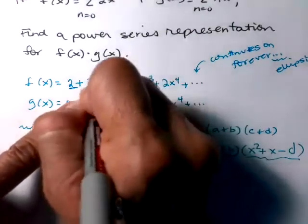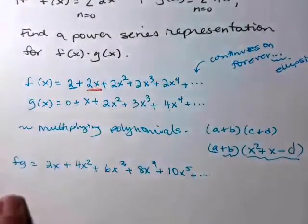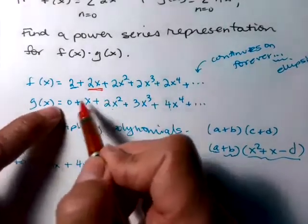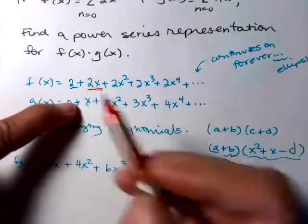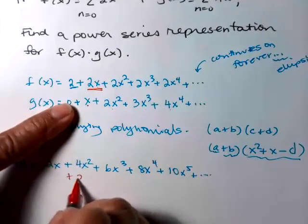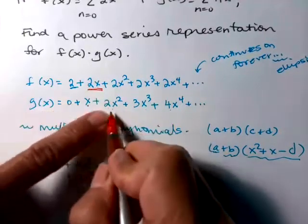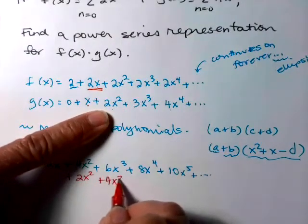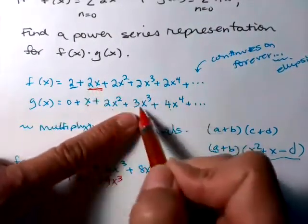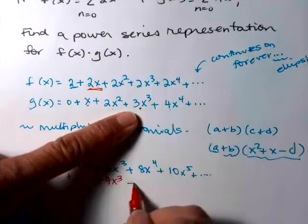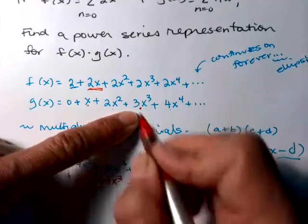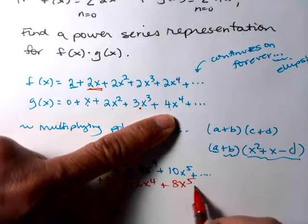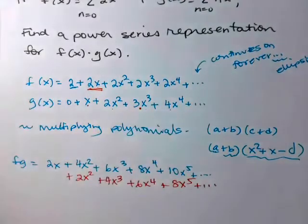Now I'm going to take the 2x through. I'm going to write it down below so that I can line up my like terms. 2x times x will be a 2x². 2x times 2x² will be 4x³. 6x^4, 8x^5. I see the pattern.